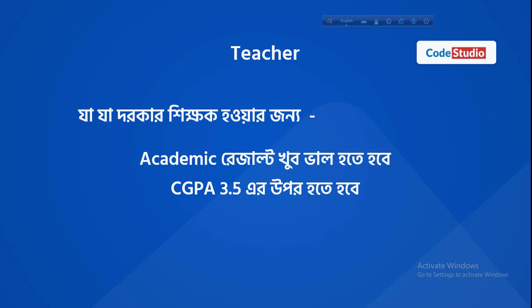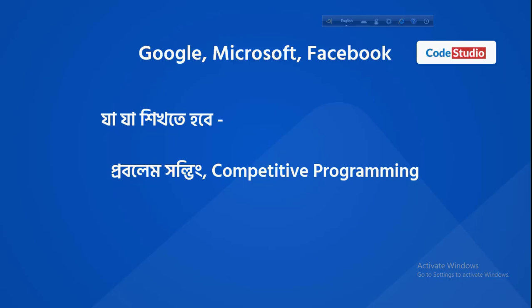Here are the skills students need. Academic result is important — an amazing result around 3.5 GPA. The goal is to do well. Companies like Google, Microsoft, and Facebook require competitive programming skills. Besides the CSE curriculum, the goal is to achieve a dream job. We have to do a lot of CSE work. This is the language — C++ and Python — for problem solving and competitive programming.